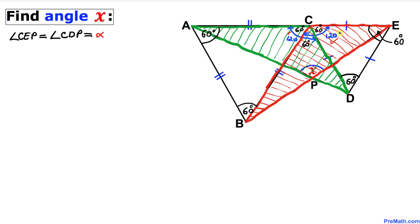Since the two shaded triangles are congruent, we can conclude that angles CEP and CDP are congruent as well. Let's call this angle alpha, so the other angle is alpha as well.